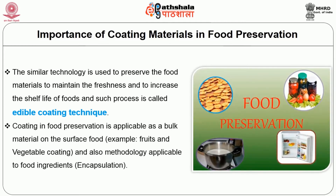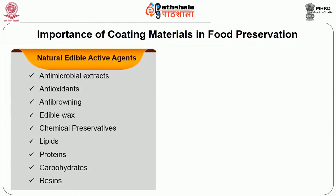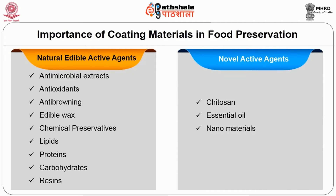Coating in food preservation is applicable as a bulk material on the surface, for example fruit and vegetable coating, and also as a methodology applicable to food ingredients like encapsulation. The natural edible active agents like antimicrobial extracts, antioxidants, anti-browning agents, edible wax, natural preservatives, lipids, proteins, carbohydrates, and resins are commonly used for coating. Novel active agents such as chitosan, essential oils, and nanomaterials are also used in food preservation.